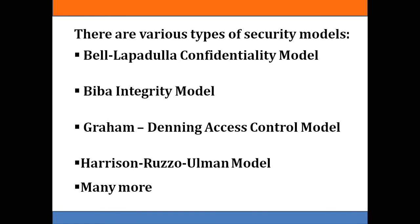There are various types of security models. The Bell-LaPadula confidentiality model is used to implement confidentiality. The Biba integrity model is used to implement integrity. The Graham-Denning access control model and the Harrison-Ruzzo-Ullman model are both used to implement access control mechanisms. Many more security architecture models are available. Let us discuss them one by one.